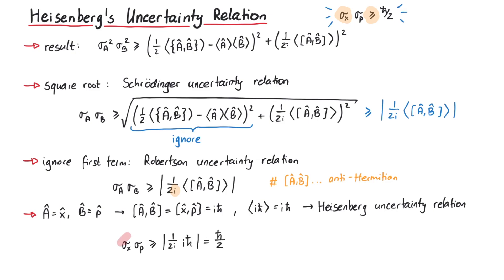we are not able to measure their eigenvalues precisely at the same time, since this would mean that the standard deviation gets zero. And zero cannot be larger than h-bar over two.